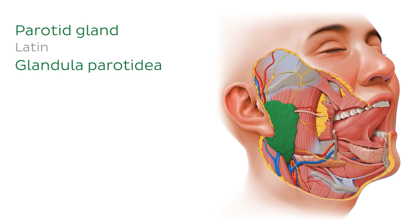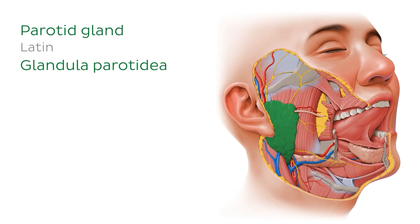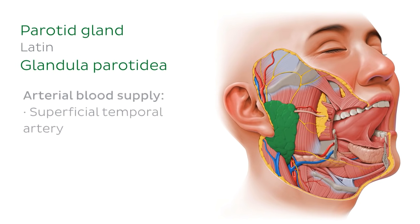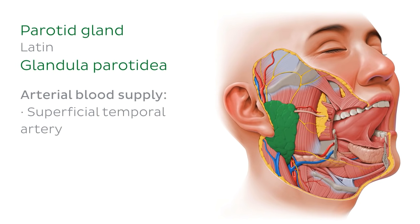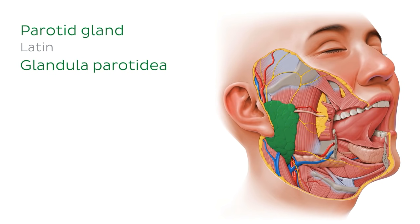The arterial supply of the parotid gland comes from three branches of the external carotid artery: the superficial temporal artery, which you see here on the image; the maxillary artery, which would be around here; and the transverse facial artery. In terms of venous drainage, the parotid gland is drained mainly by the retromandibular vein.